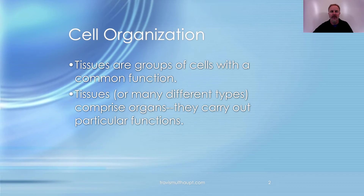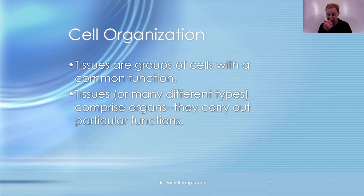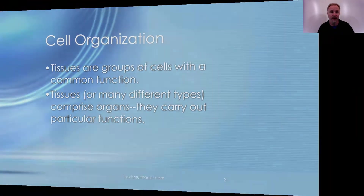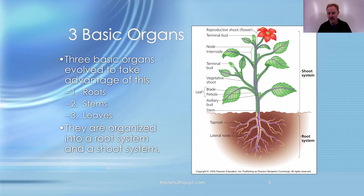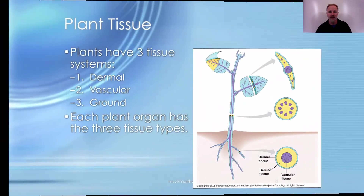Cells are the fundamental units of all living things, and tissues are groups of cells with a common function. There are many different types of tissues — whether in a plant or an animal — and they make up organs that carry out particular functions. Plants have three basic organs: roots, stems, and leaves, organized into a root system and a shoot system. Anything above soil level is the shoot system; anything below is the root system.